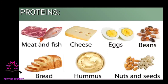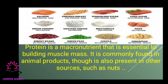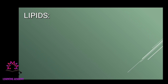The second nutrient is proteins. Examples include meat, fish, cheese, eggs, beans, bread, hummus, nuts, seeds, and dal. Protein is a macronutrient essential to building muscle mass. It is commonly found in animal products, though it is also present in sources such as nuts.